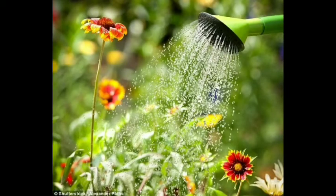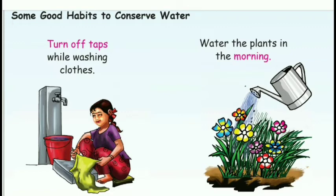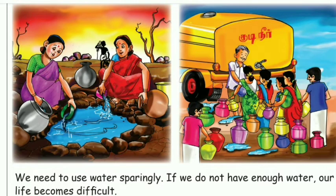What about the plants? If you are growing plants, you have to water them daily. We need to use water sparingly. If we do not use enough water, our life becomes difficult, but we should not use water in large amounts just because it is available. You have to use water in less quantity and avoid using it for unnecessary things, like leaving the tap open while washing clothes.